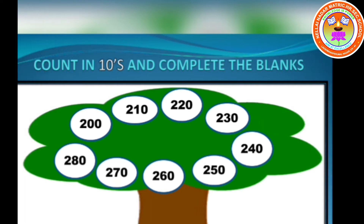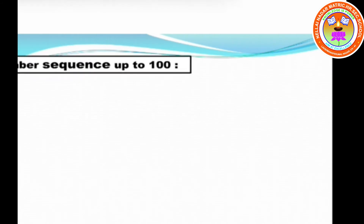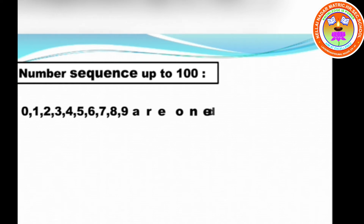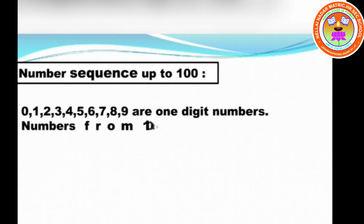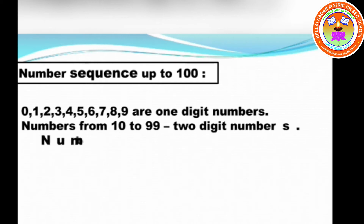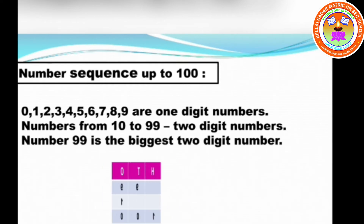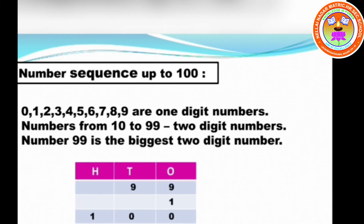Now, number sequence up to 100. Numbers 0 to 9 are 1-digit numbers. Numbers from 10 to 99 are called 2-digit numbers. Number 99 is the biggest 2-digit number. Adding 1 to 99 we get 100. 9 tens plus 1 ten equals 100.